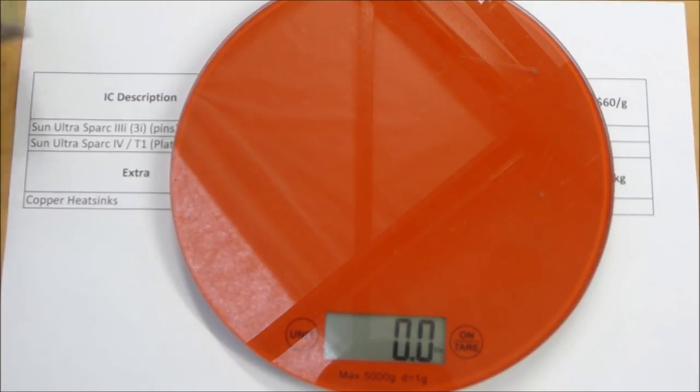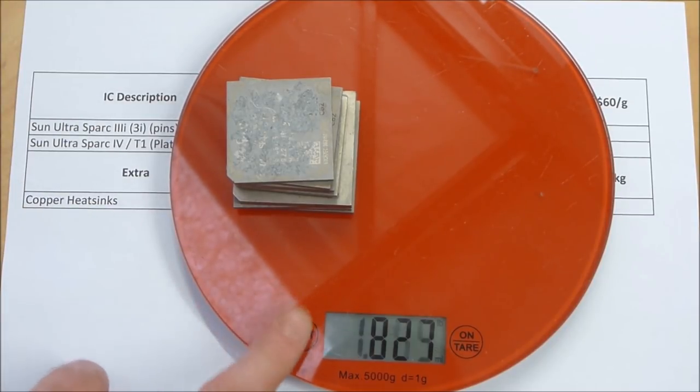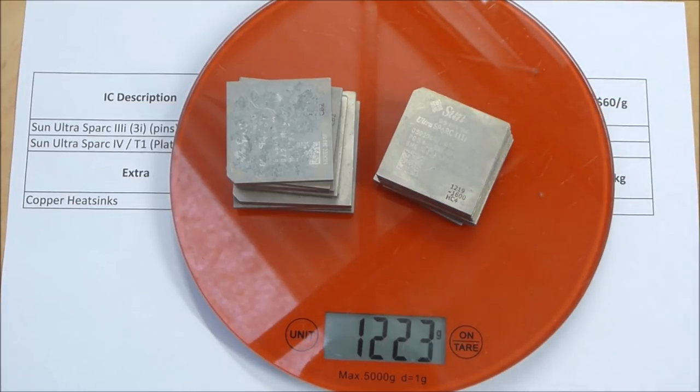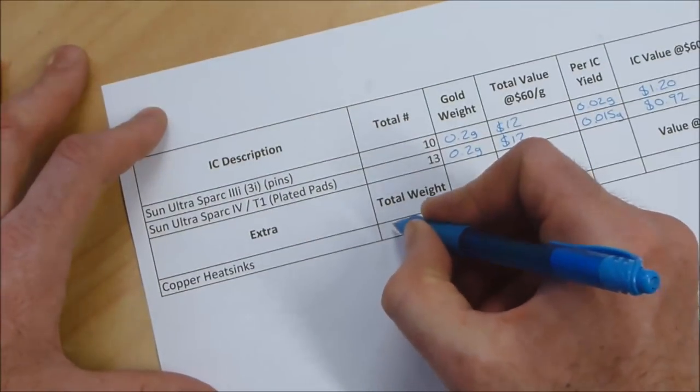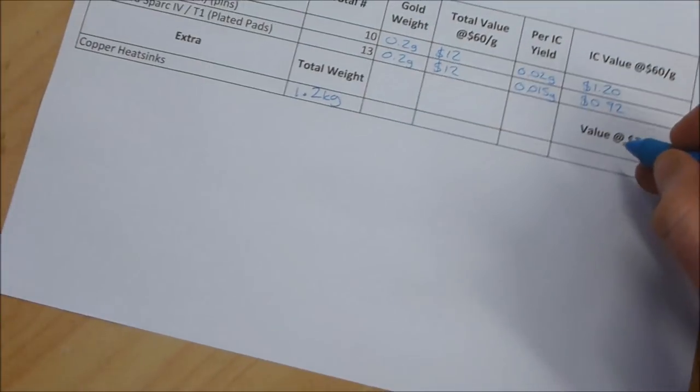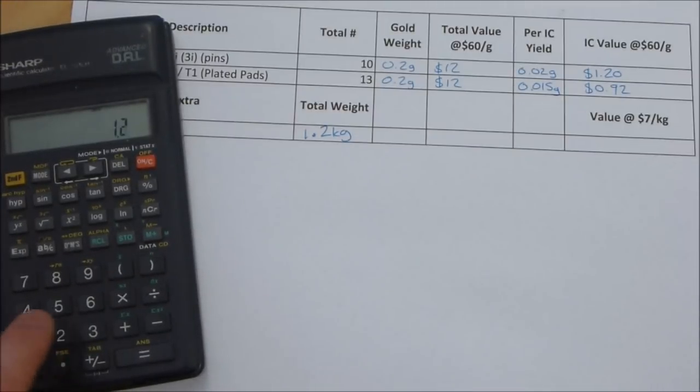So that's the first bunch from the plated processors. Let's go to something useful like grams, so 817 grams there plus that's from the ones with the pins, so yeah, let's call that 1.2 kilos. So 1.2 kilograms of copper heat sinks and at about $7 per kilogram which is roughly what copper is selling for New Zealand these days for scrap, that gives us a good amount, so $8.40.